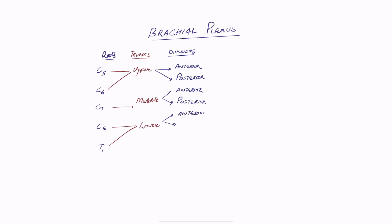It's really important to understand which divisions make which cords. So: roots, trunks, divisions, and now the cords. The cords are easy to understand. The anterior divisions of the upper and middle trunks — C5, C6, C7 — form one cord. The posterior divisions of all three trunks — upper, middle, and lower — form one cord.